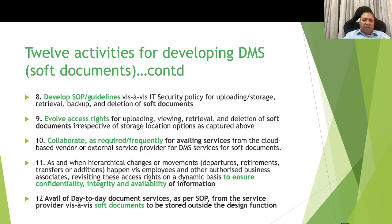Activity 9 is evolving access rights for uploading, viewing, retrieval, and deletion of stored documents, irrespective of the storage location. Activity 10 is collaborating as required on a day-to-day basis with cloud-based vendors or external service providers for DMS services. Activity 11: as and when hierarchical changes such as departures, retirements, transfers, or additions take place for employees and business associates with DMS access, revisit access rights dynamically to ensure CIA — confidentiality, integrity, and availability — of information is retained.